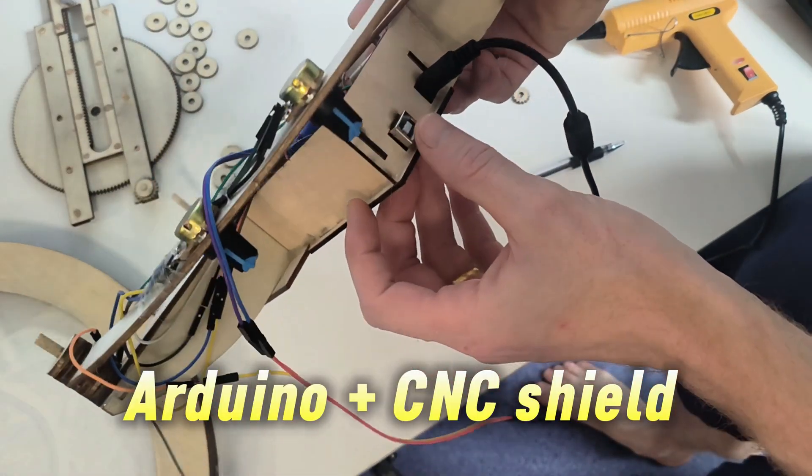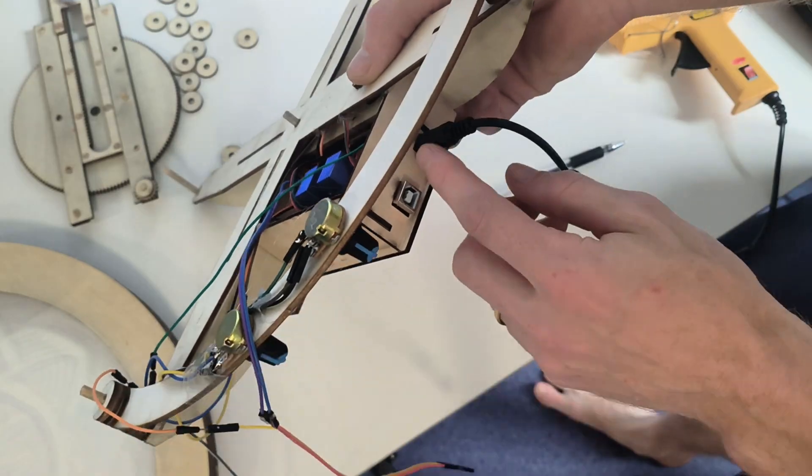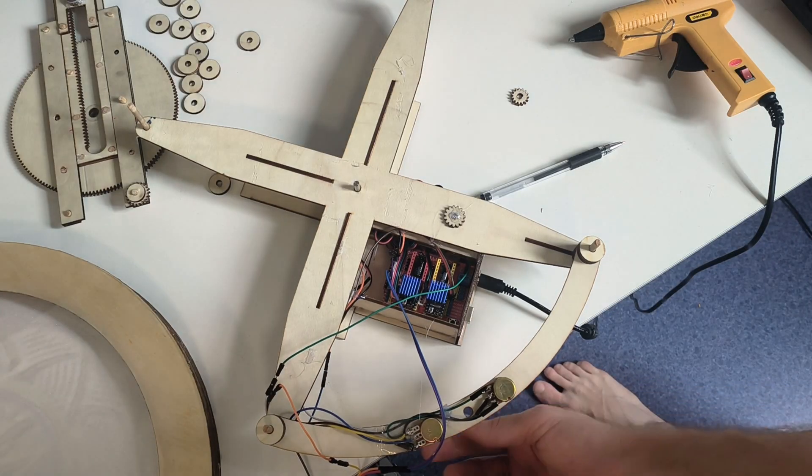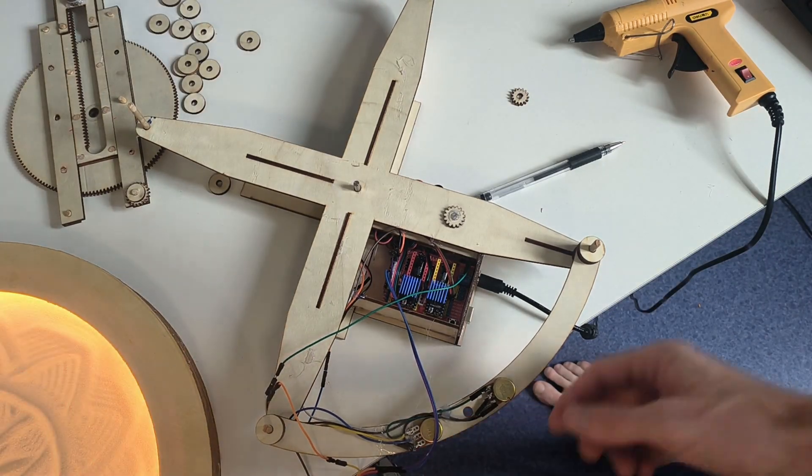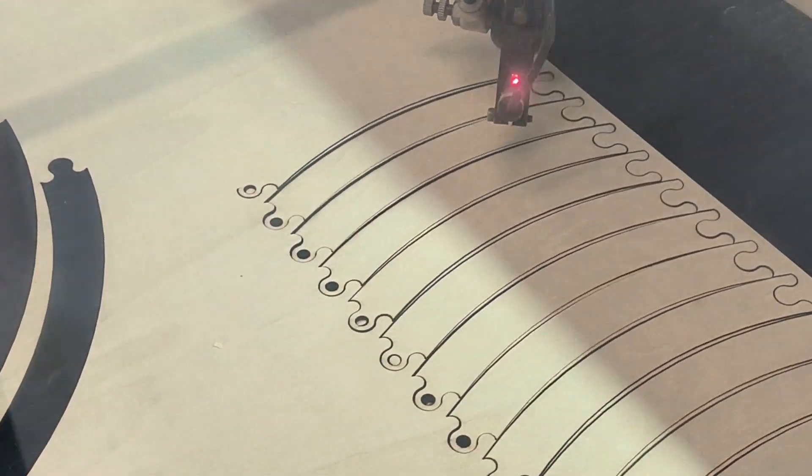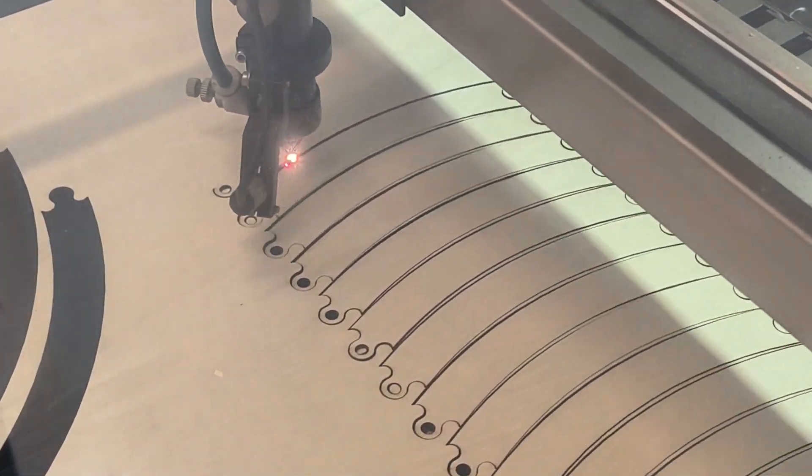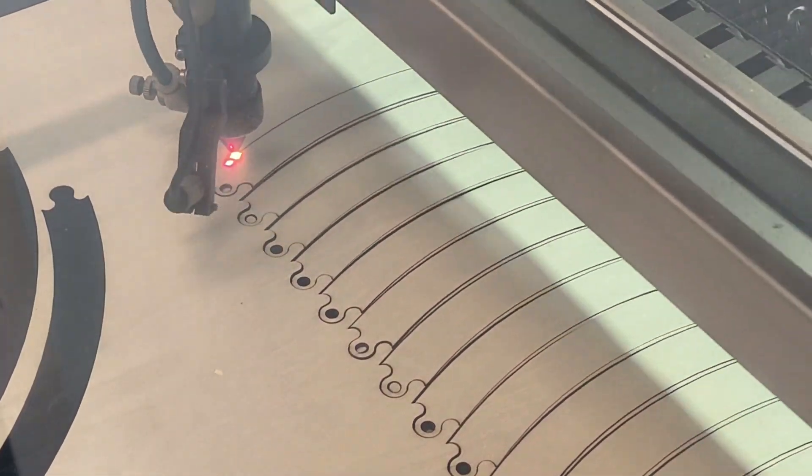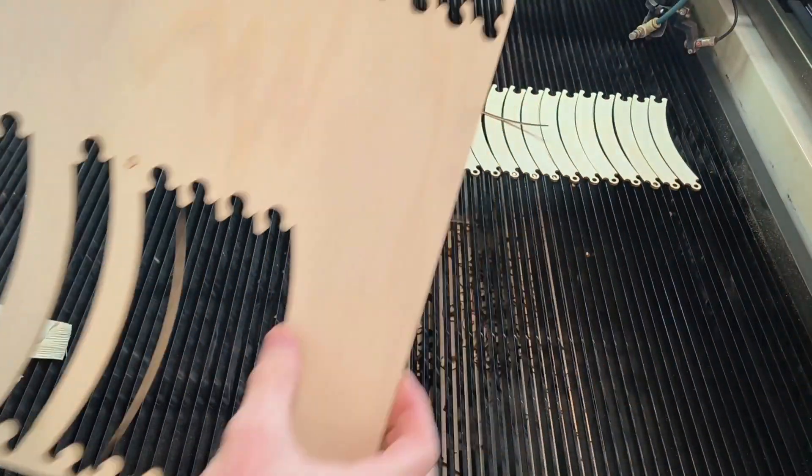It's just using one Arduino and the CNC shield, with two potentiometers to turn on that will change the speed of the stepper motors. It's just using two stepper motors.